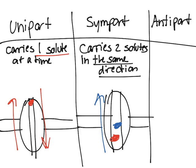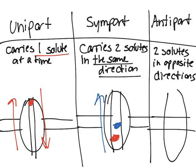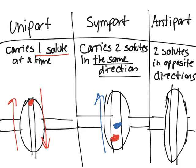Antiport also involves two solutes, but they move in opposite directions. For example, with a protein here forming a channel, one solute goes down one way and another goes up the other way — so opposite directions.